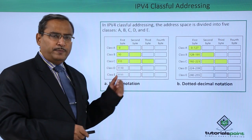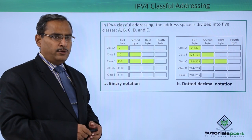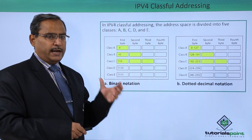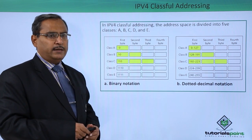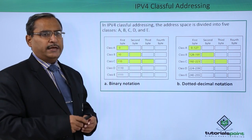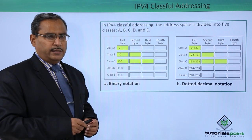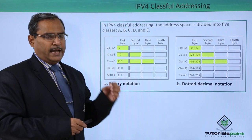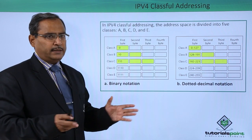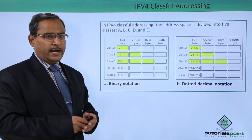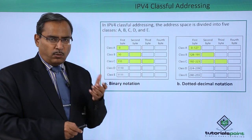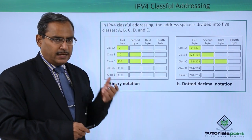In the previous video, we discussed what IPv4 is — that we have a 32-bit addressing format and all nodes in the network must have unique, non-conflicting addresses, so there will be no conflict and no ambiguity. Now let us go over the class details.